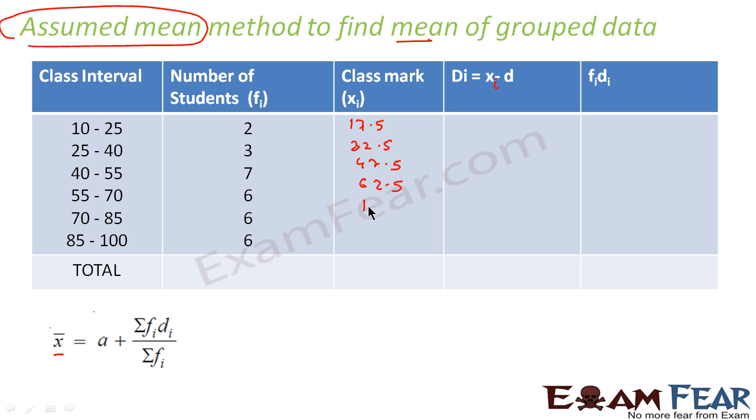70 plus 55, 125 by 2, that is 62.5. 70 plus 85, 155 by 2, that is 77.5. And 85 plus 100, 185 by 2, that is 92.5. So you have all the values of xi.